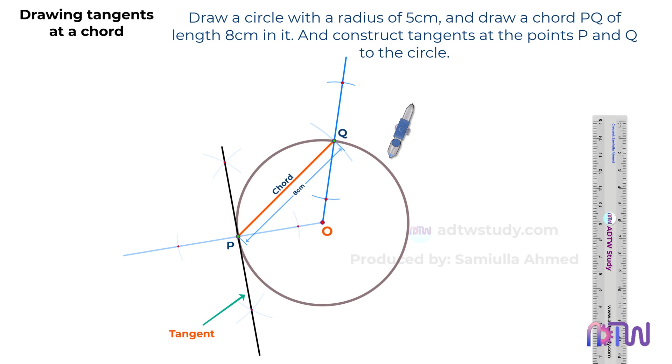After this, readjust the compass to a length greater than half of the previous length between the arcs. Using the points where the arcs intersect as centers, draw additional arcs.